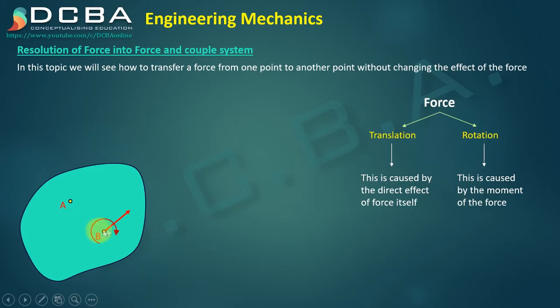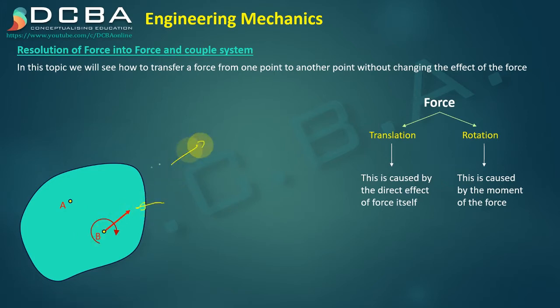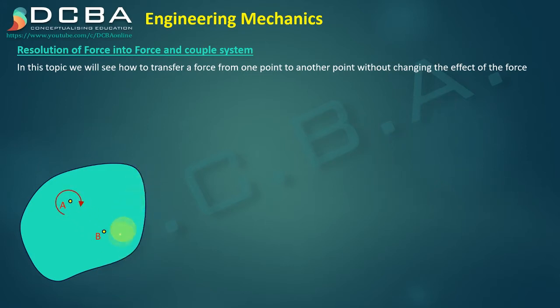You can see that the end effect on the body remains the same: because of this force, the body can still translate in this direction, and because of this moment, the body can still rotate about point B. That is how we can transfer a particular force to another point.